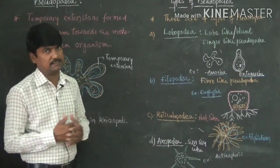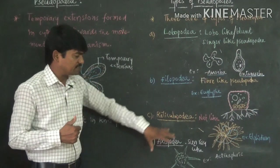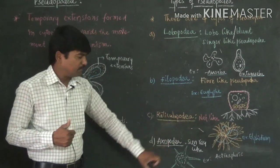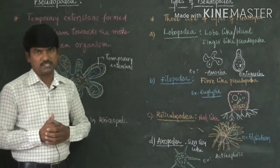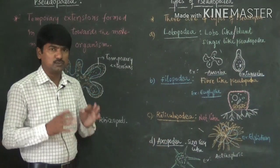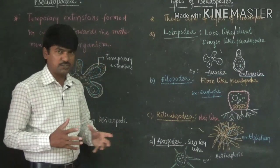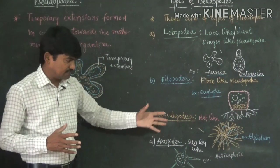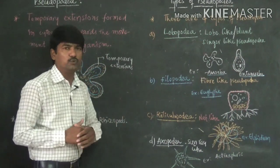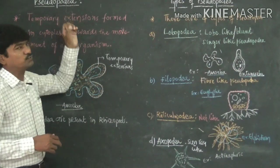The fourth type is axopodia. 'Axo' means sunray-like, and 'podia' means legs, so sunray-like pseudopodia are present in animals called Actinophrys and Heliozoa. In these animals we can identify axopodia, which appear as sunray-like structures. These are the four types of locomotory organelles — the four types of pseudopodia.